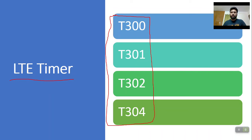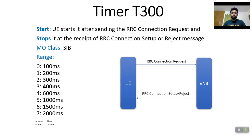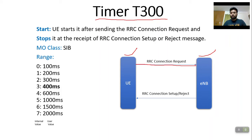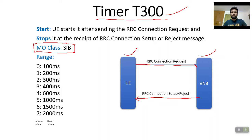Timer T300 belongs to the call initiation process. As you can see, there is the UE and the eNodeB. When UE sends the RRC Connection Request to the eNodeB, timer T300 starts. Once the UE receives the RRC Connection Setup or the Reject message, this timer ends. This timer belongs to the MO class — for those working on Nokia equipment, each parameter belongs to an MO class. This parameter comes under the SIB class.